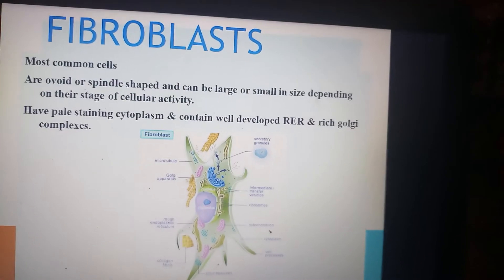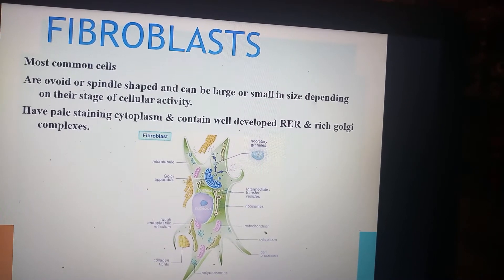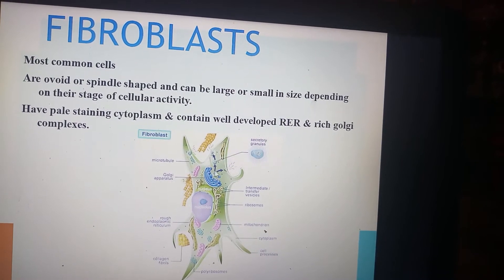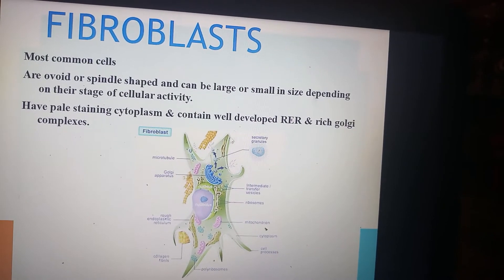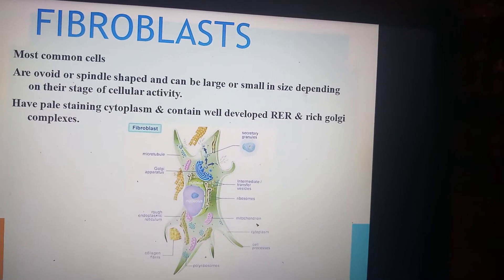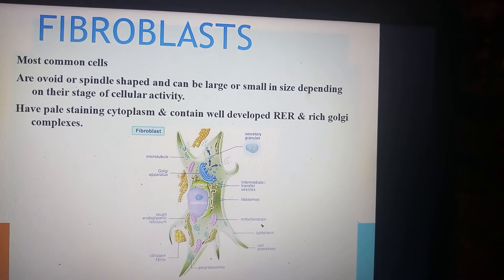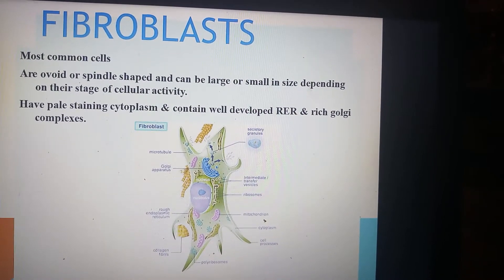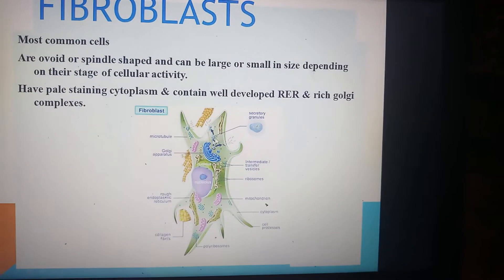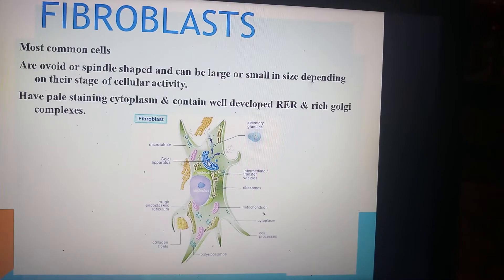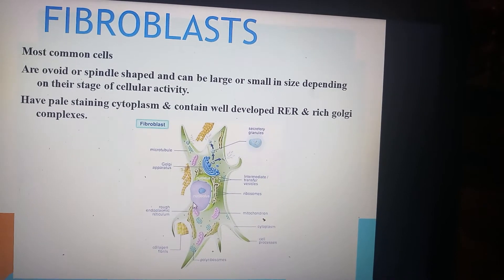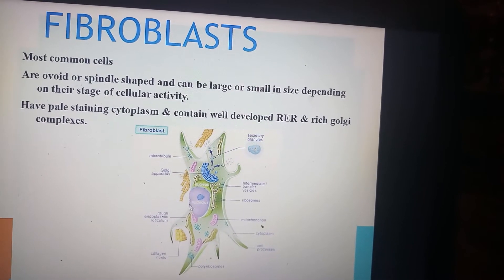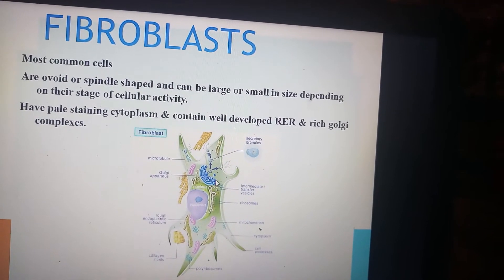The second cells of the connective tissue are the fibroblasts. This is the diagram of the fibroblast. These are the most common cells of the connective tissue. They are wide or spindle-shaped and can be large or small in size depending on their stage of cellular activity. They have pale-staining cytoplasm and contain well-developed rough endoplasmic reticulum and rich Golgi complexes. This means in the fibroblast, the synthesis, packaging, and sorting of proteins occur.